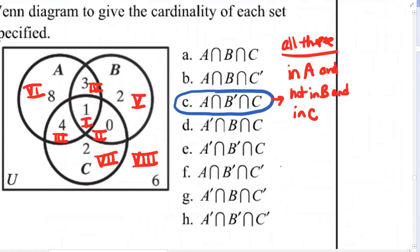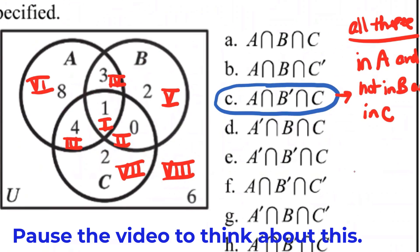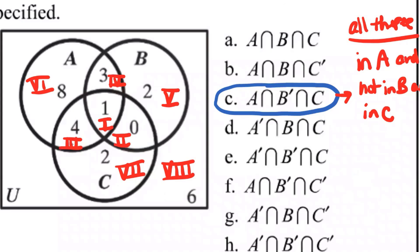So you tell me what region or regions satisfy those three characteristics in A and not in B and in C simultaneously? Three would be this one here. Yes,